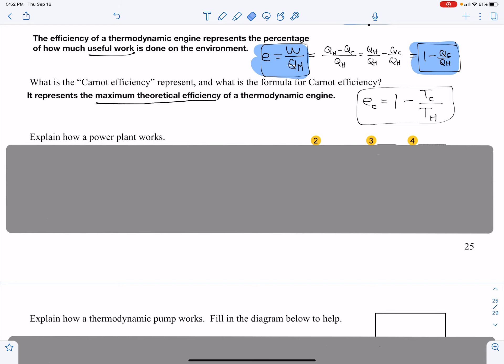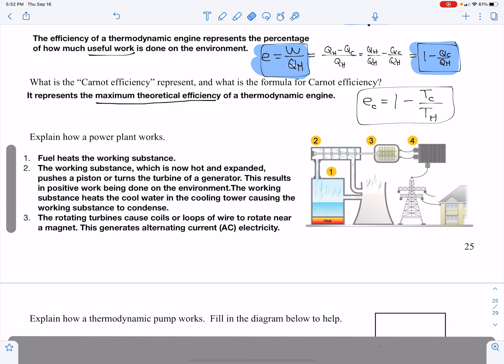Explain how a power plant works. Well, a power plant, number one, fuel heats the working substance. The working substance, which is now hot and expanded, would be the air in this case. So we're going to boil some water and the water is going to turn into steam. Steam is the working substance, and that is going to turn the turbine.